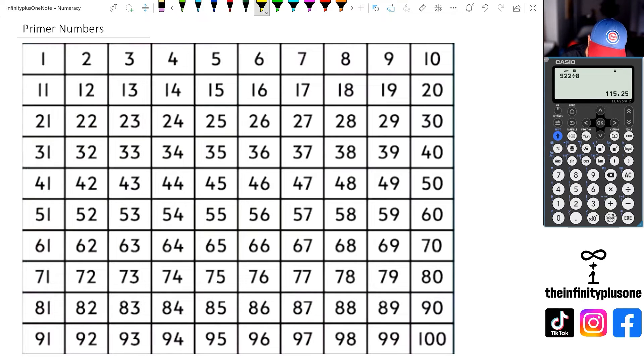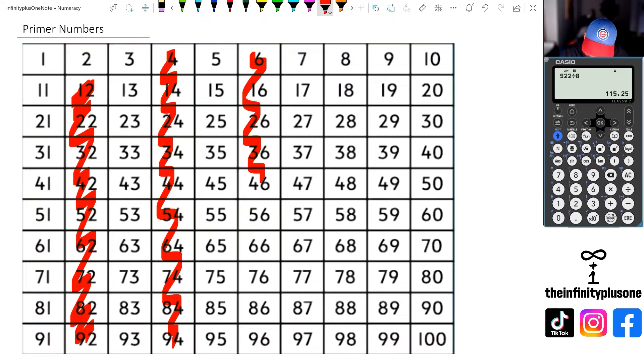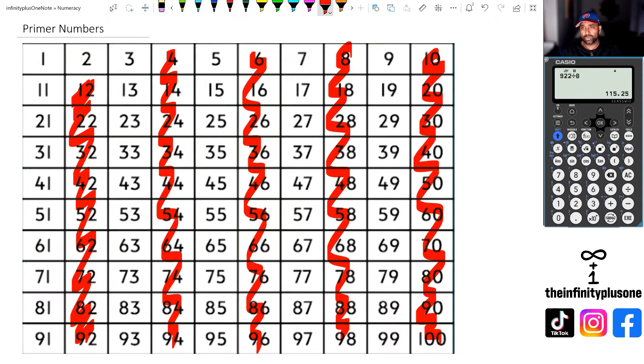If we take every even number apart from two, it's actually not going to be a prime number. That means we are going to basically cancel out all of this line here, this line, all of this line, just going to cross it all off. What I've crossed out there is all the multiples of two.